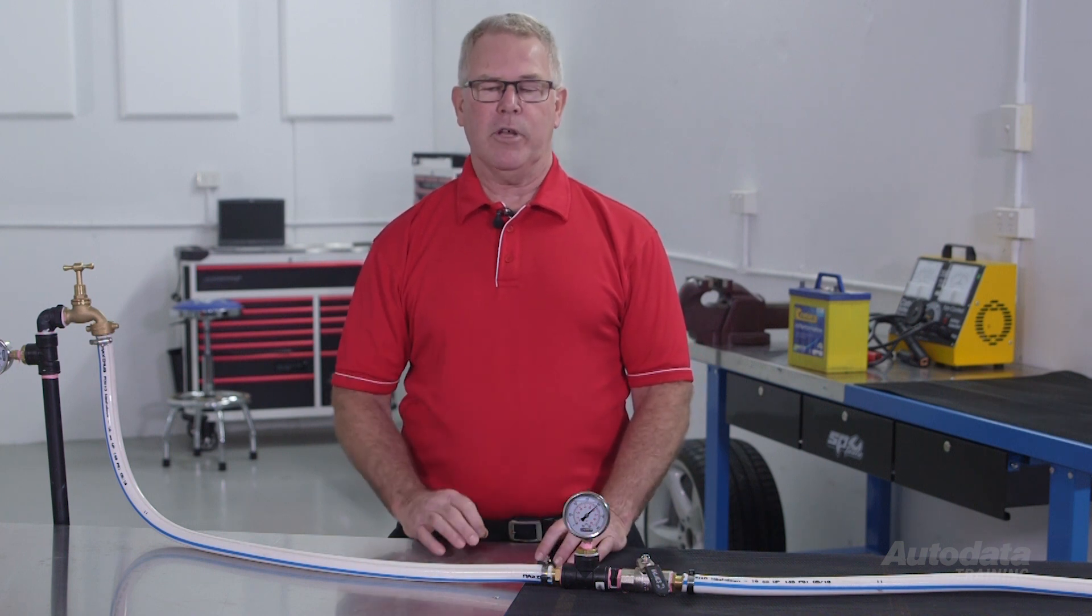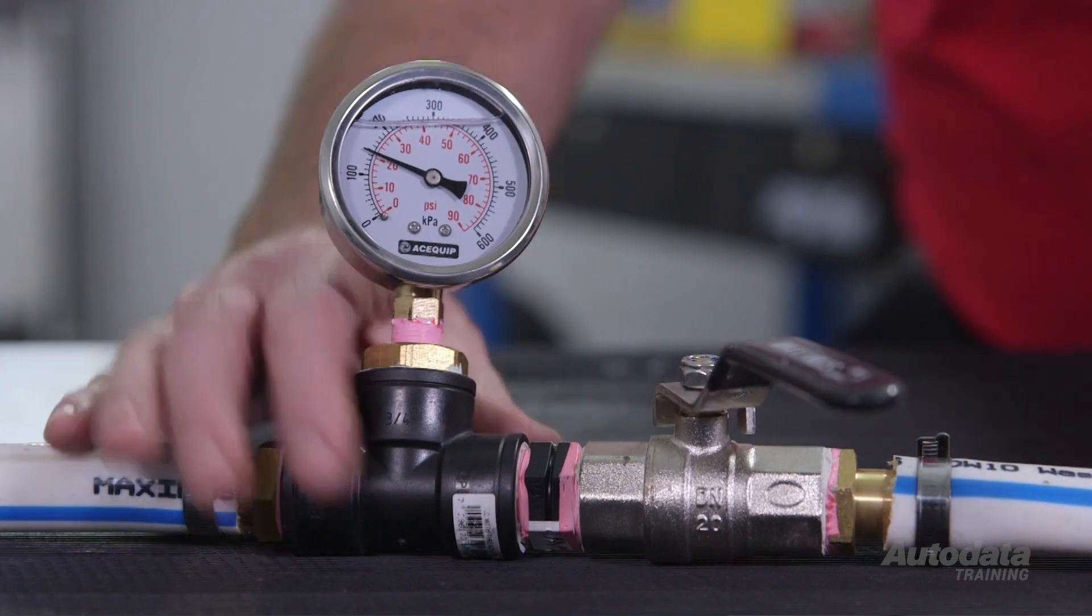If you research the definition of resistance, it will say resistance opposes the flow of current. But I like to think of resistance as resistance controls the flow of current. Here, I have a lot of water flow, but I can easily control the flow by adjusting the size of the kink or resistance. The more I kink the hose, the less flow.